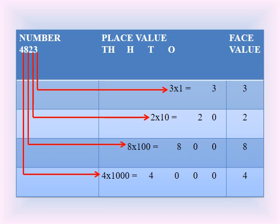Starting with 3: it is at ones place, so 3 × 1 = 3. Place value of 3 is 3. Next, 2 is at tens place, so 2 × 10 = 20. Place value of 2 is 20. Next, 8 is at hundreds place, so 8 × 100 = 800. Place value of 8 is 800. Last, 4 is at thousands place, so 4 × 1000 = 4000. Place value of 4 is 4000.